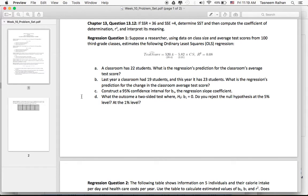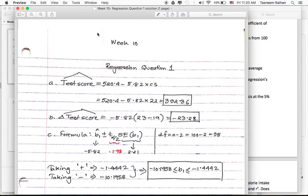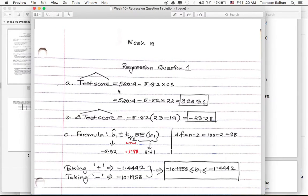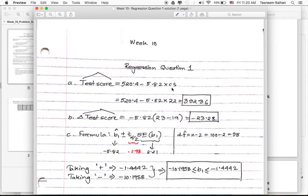The first question says a classroom has 22 students, what is the regression's prediction for the classroom's average test score? The test score hat equals 520.4 minus 5.82 times CS. Since the class size is 22 students, you just put CS equals 22 here and work this out, which equals 392.36. The estimated test score when the class size is 22 is equal to 392.36.